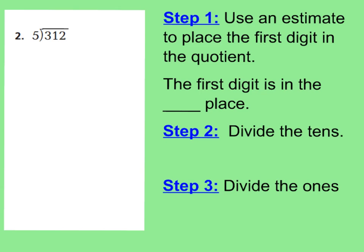Step two will be divide the tens. The reason why we're dividing the tens is because it's 312, and I have 31 tens. So we're going to divide these 31 tens, and do 31 divided by 5. I know 30 divided by 5 is 6, so 31 divided by 5 is 6. Now step two is to multiply: 6 times 5 is 30. I've used 30 of my tens out of 31 tens. Let's subtract to see how many tens I have left — I have one 10 left.